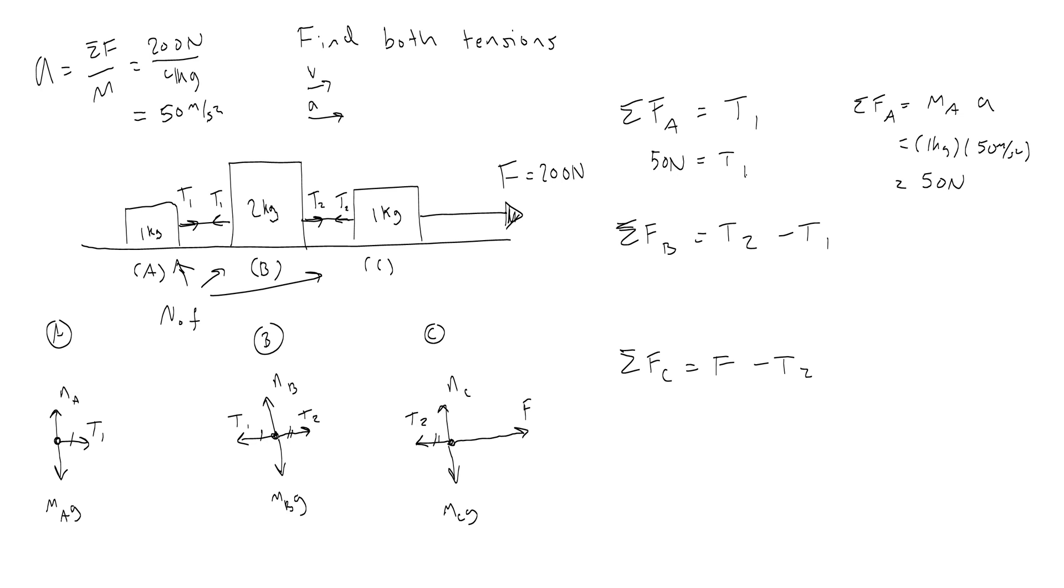Now I can use either of these next two net force equations to find T2. So let's go ahead and use this one right here to figure out what the net force on B is. I do the mass of B times the acceleration, or 2 kilograms times 50 meters per second squared, which gives me 100. And so, to figure out what T2 is, I would take the net force on B and add T1 to it, which would be 100 newtons plus 50 newtons. So T2 is 150 newtons.